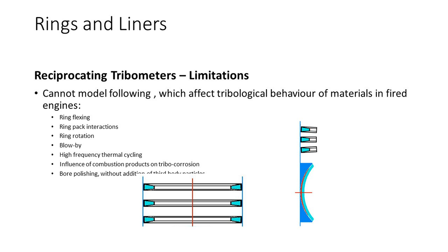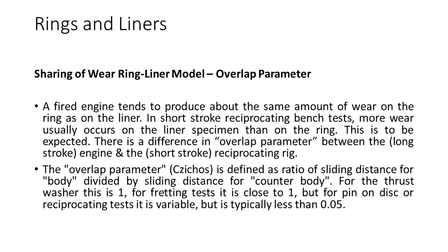Reciprocating tribometers cannot model the following parameters which affect tribological behaviour of materials in fired engines. In the engine, the rings flex depending on direction of motion, combustion pressure and ring profile — it is not possible to emulate this motion in a reciprocating tribometer. A fired engine tends to produce about the same amount of wear on the ring as on the liner. In short-stroke reciprocating bench tests, more wear usually occurs on the liner specimen than on the ring.